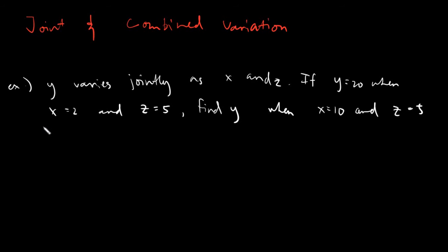We have three examples here for today. Take note: all variation problems will simply be about solving for the unknown. The prior skills you need are identifying what is given, identifying what is asked or what is the unknown, and substitution and solving for the unknown.